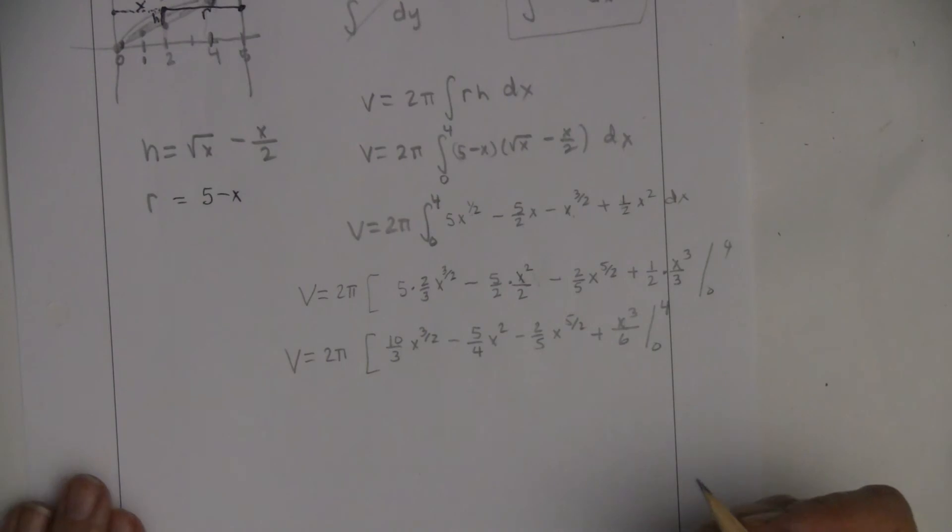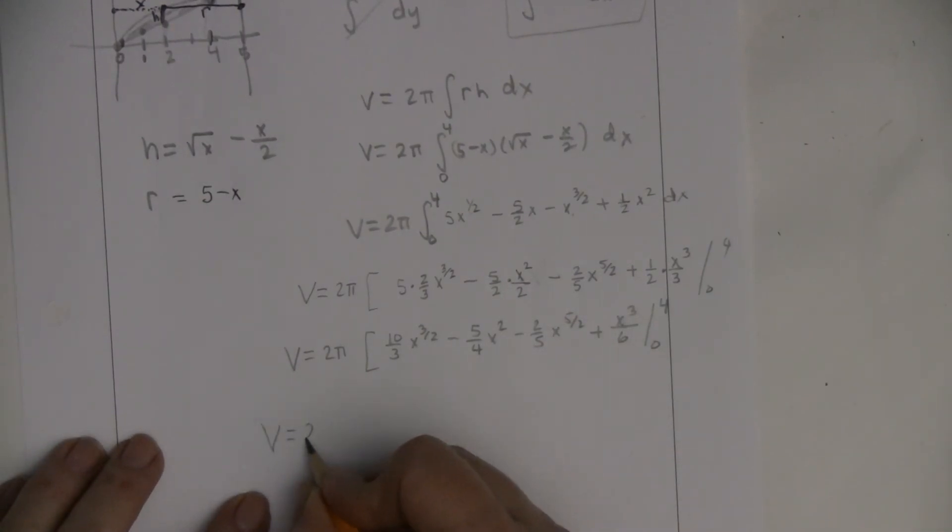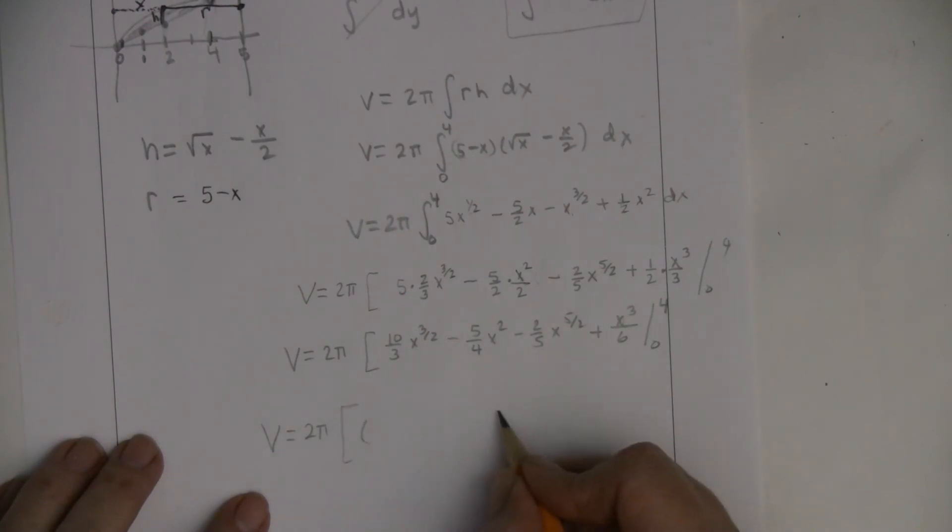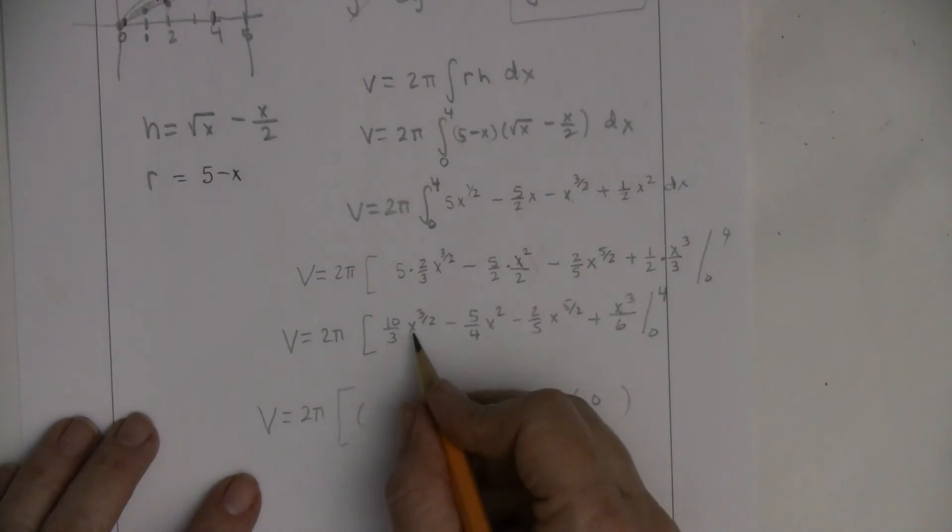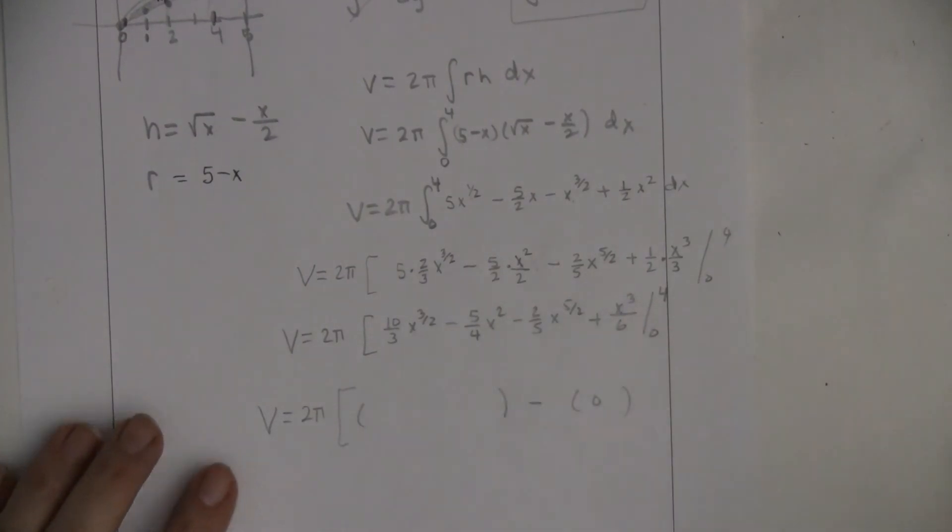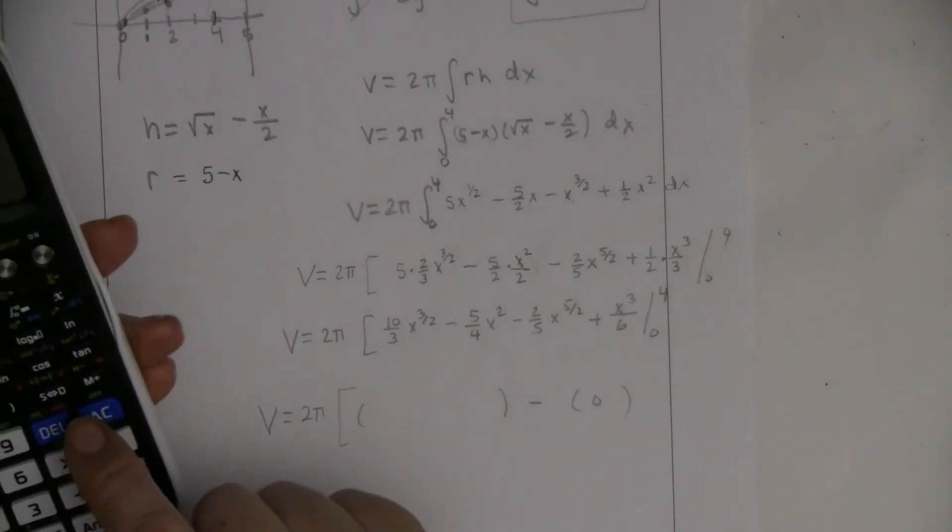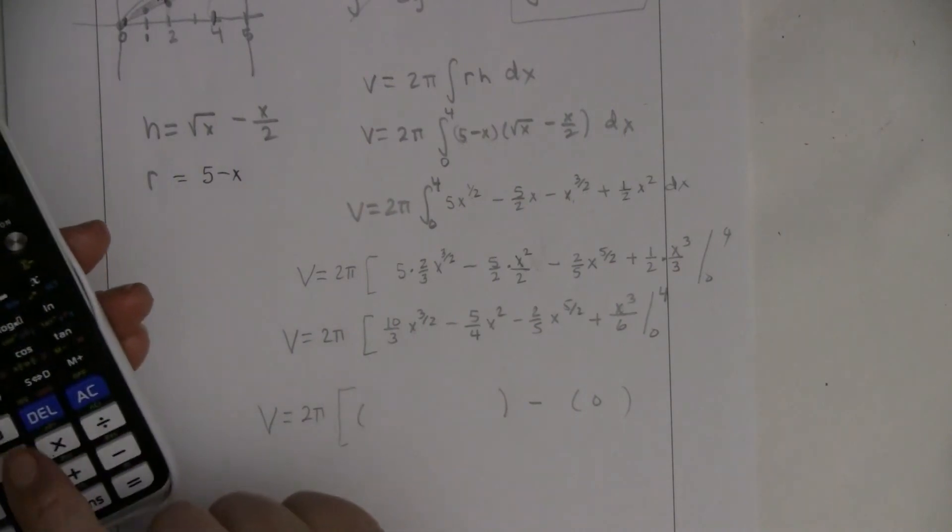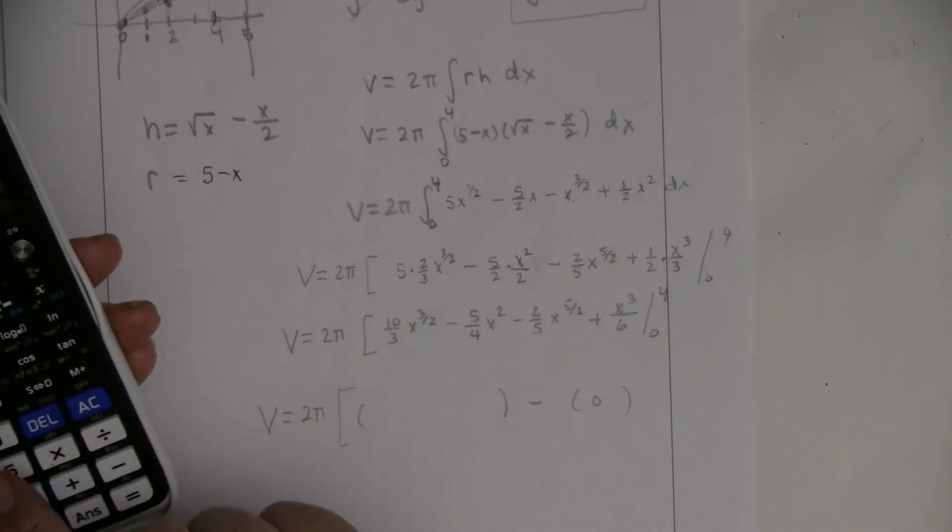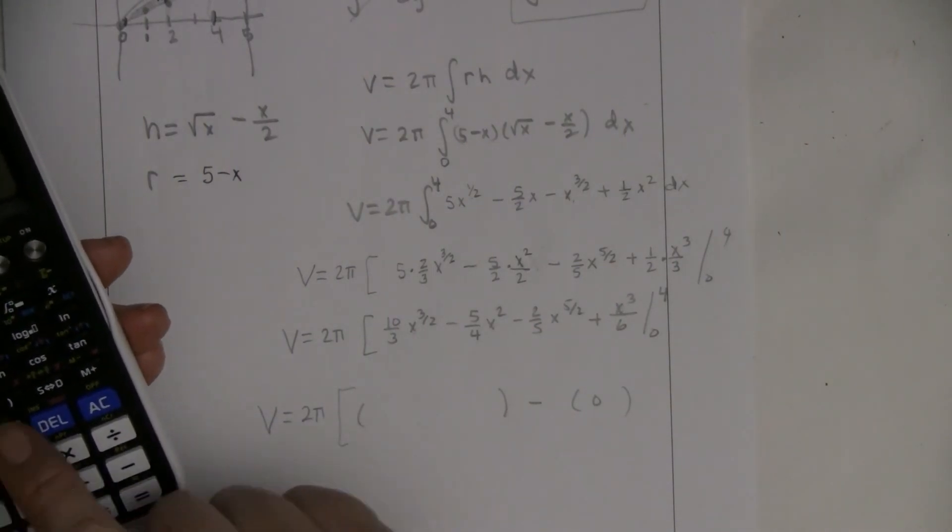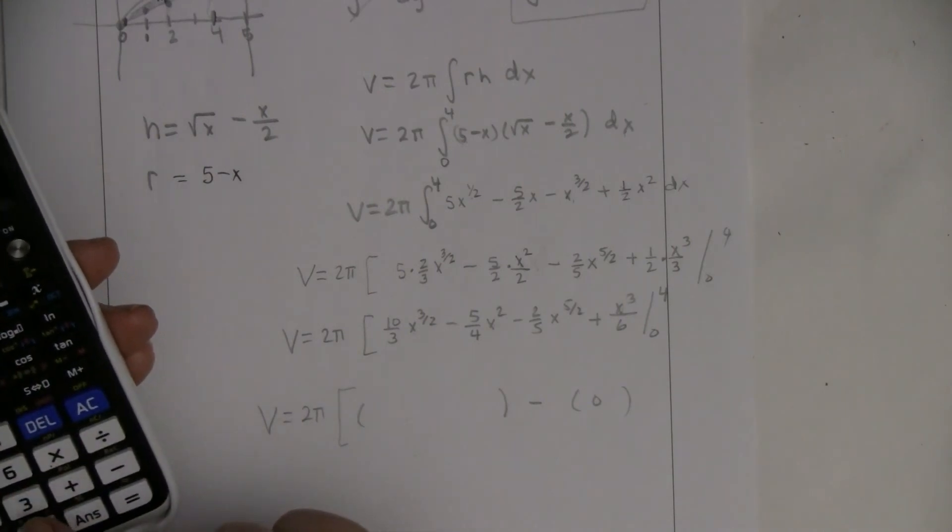So now I'm going to put in 4, and I'm going to minus 0. And I'm just going to put in 4 with my calculator, so I'm not going to write it. I'm feeling kind of tired, feeling kind of lazy. I'm feeling like I've worked too hard already today. So this is 4 raised to the 3/2.